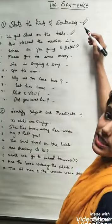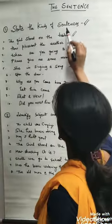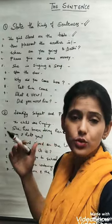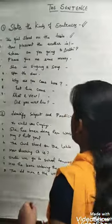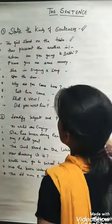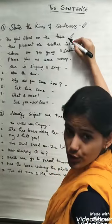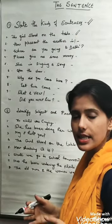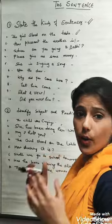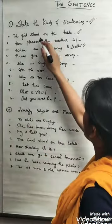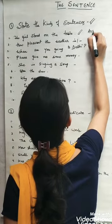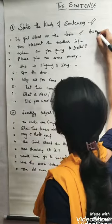Okay, so students see the first question. State the kinds of sentences means we have to recognize the sentences and we have to write what are the kinds of sentences. The girls stood on the table. This sentence ends with a full stop. This is just a statement. We are not asking anything in this sentence. We are not making any request or command. So, according to the definition, this sentence is assertive sentence or we can say declarative sentence.